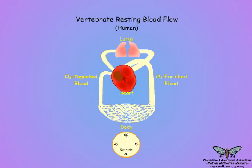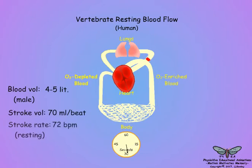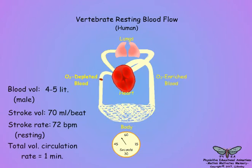Vertebrate animals have a complex closed circulatory system of veins filled with oxygen and nutrient-rich blood that is pumped under pressure to the peripheral tissues by a central heart. The blood volume of an average man is 4-5 liters, and at a stroke volume of 70 mls per beat and an average resting heart rate of 72 beats per minute, the entire blood volume of a human passes throughout the body and back to the heart in about one minute.